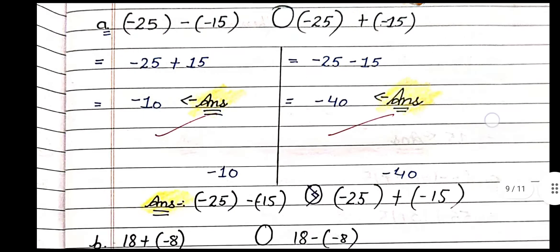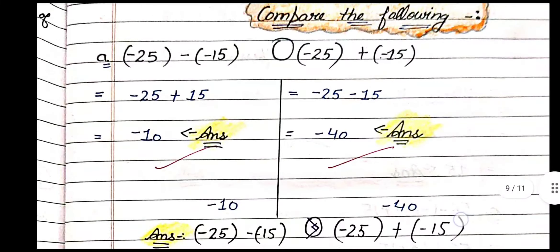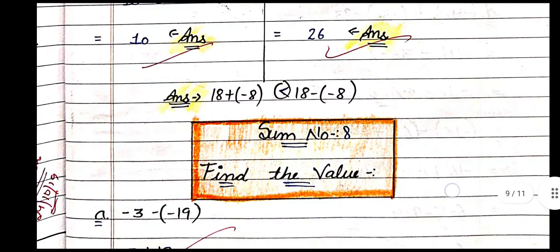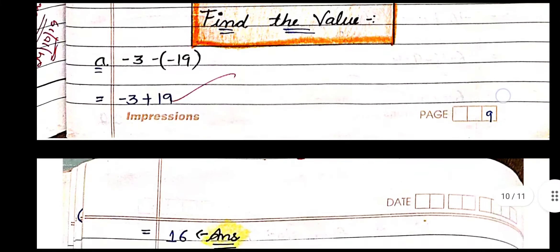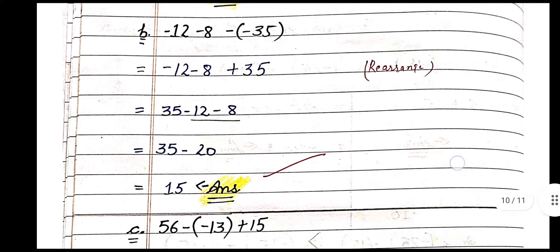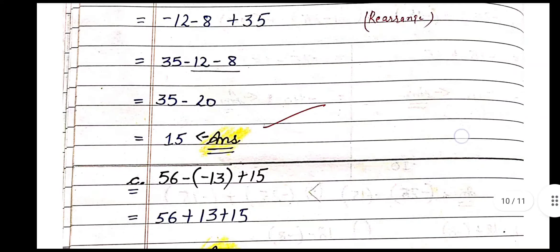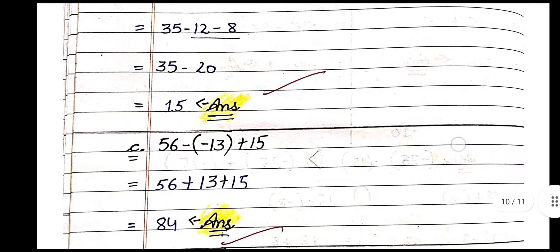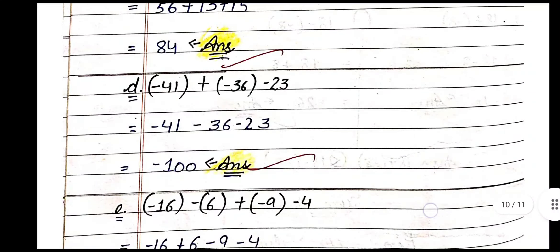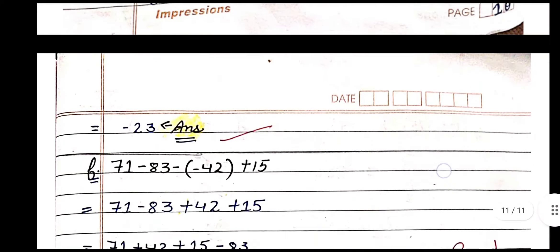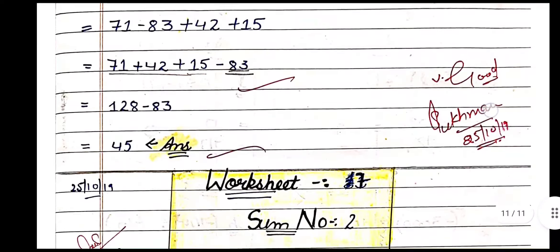For compare problems, solve both sides separately and then put the sign at the end. For 'find the value' problems, the same steps apply — positive and negative integers together. Always follow four steps: first open the bracket, then rearrange, then add all positives, add all negatives, then subtract. Use always four steps in all the sums — only four steps.